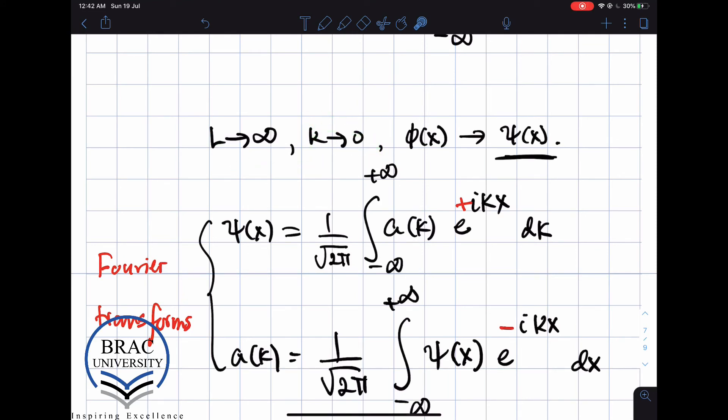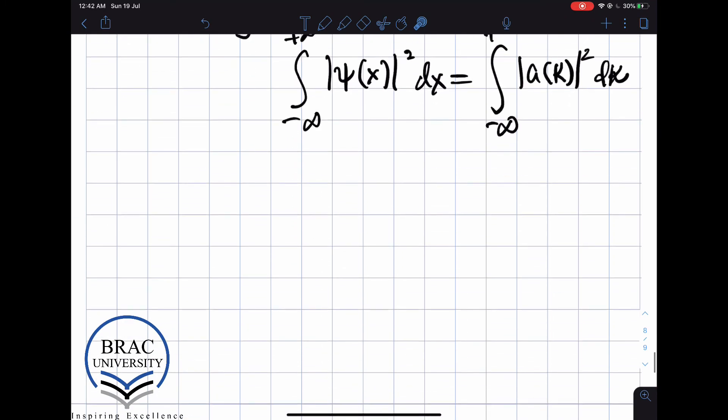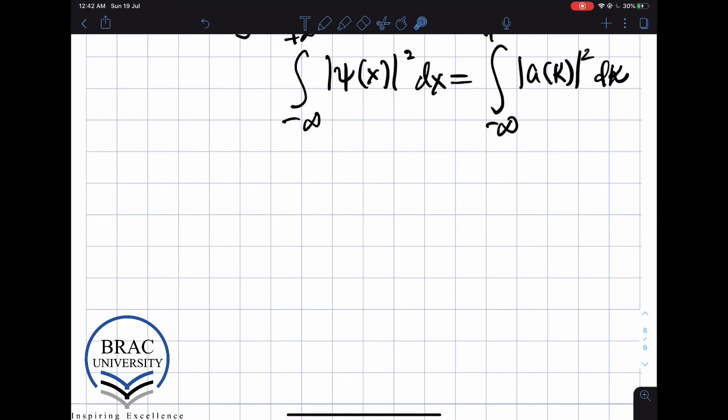So we took this limit where we took L to go to infinity and k to go to 0. But in this limit, the Fourier series goes to the Fourier integral. So this is the Fourier integral, but this only works if the function ψ(x) satisfies certain conditions. In other words, the function ψ(x) has to be nice.